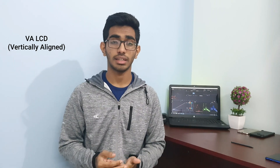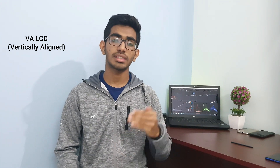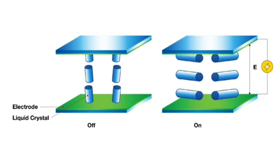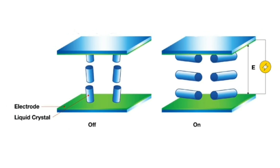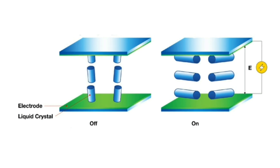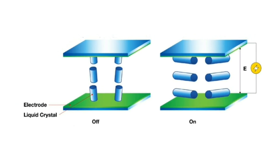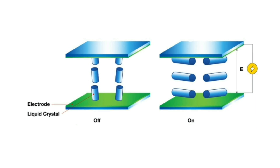Next is VA LCD. VA stands for vertically aligned. In this type of LCD the crystals are vertically aligned to the substrate, meaning they are perpendicular to it. When voltage is applied to these crystals they move horizontally to let the light through. VA LCDs have the deepest blacks compared to other LCDs.